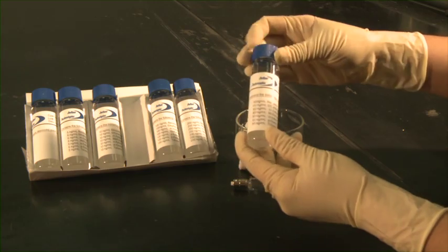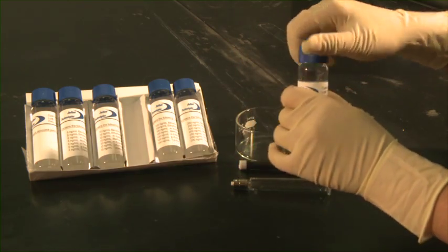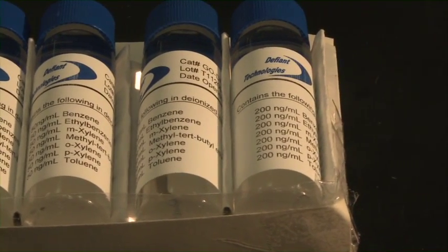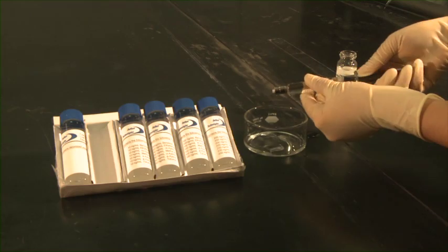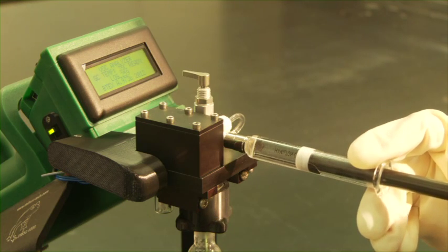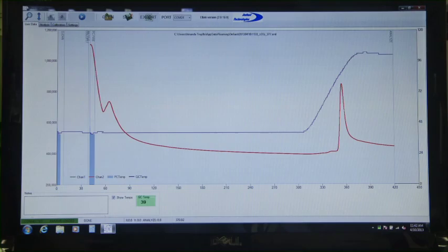Now you are ready to run your calibration standards. Start with the lowest concentration and continue to the highest concentration to avoid cross contamination. Load exactly five milliliters of the standard into the Frog, then click the start button in Elvin to begin the analysis.